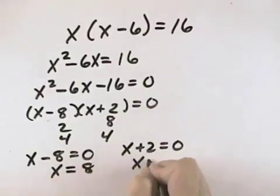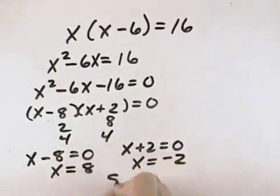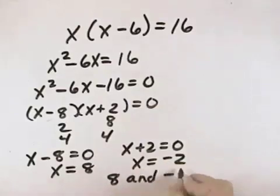Subtracting 2 from both sides, I get X equals negative 2. So 8 and negative 2 are the two solutions to this quadratic equation. Thank you for tuning in.